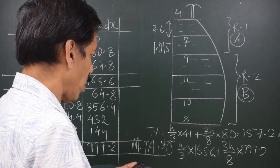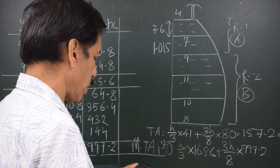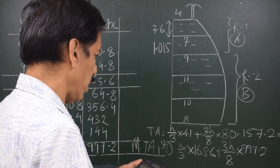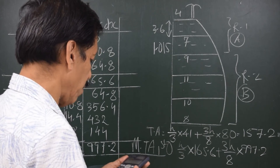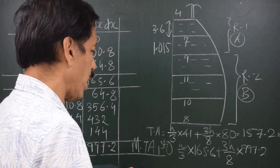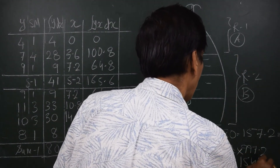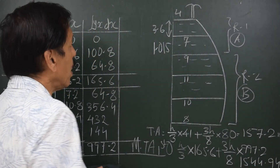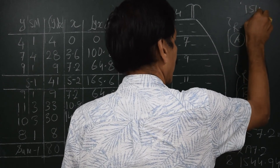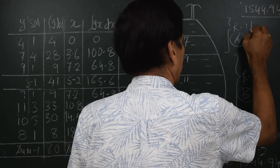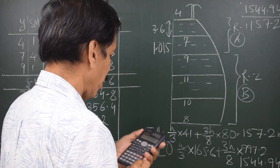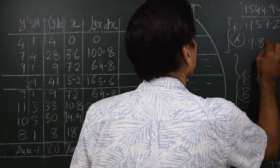That gives a total area of 157.2 square meters. The moment of total area about the first ordinate is h/3 times 165.6, which is 1.2 times 165.6 giving 198.72, plus 3h/8 times 997.2, which is 997.2 divided by 8 times 10.8 giving 1346.22. Adding these: 198.72 plus 1346.22 gives 1544.94 cubic meters. Dividing 1544.94 by 157.2 gives 9.828 meters.